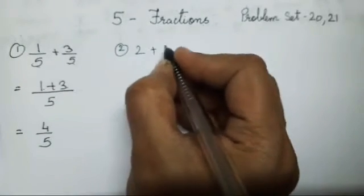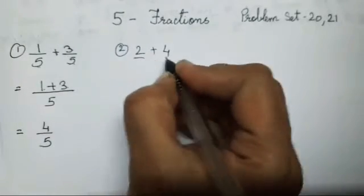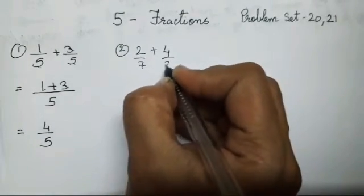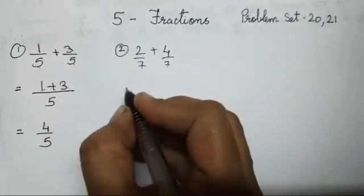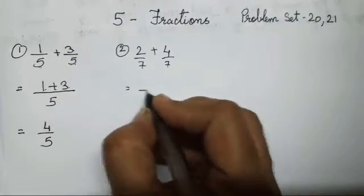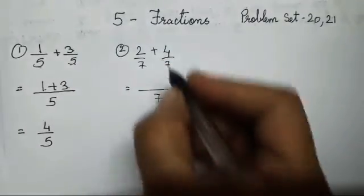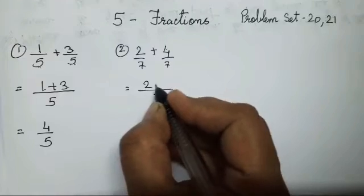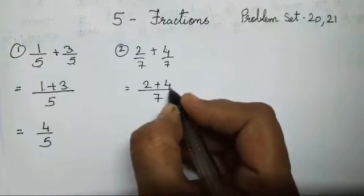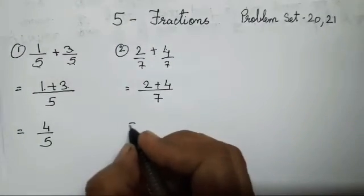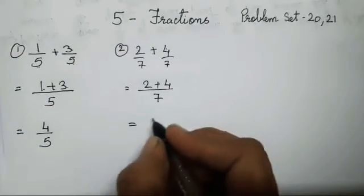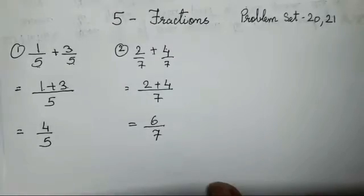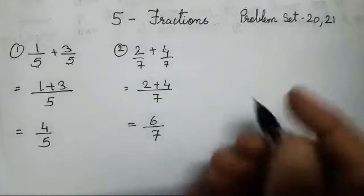The next one is 2 upon 7 plus 4 upon 7. The denominators are the same, so let's write the denominator once. 2 plus 4 is going to be 6 upon 7. Got it?